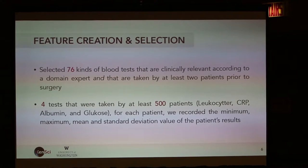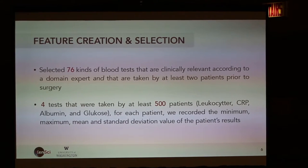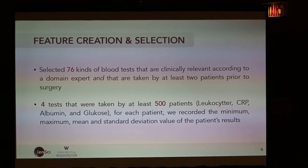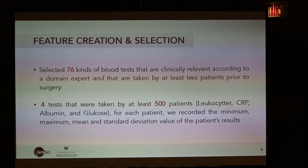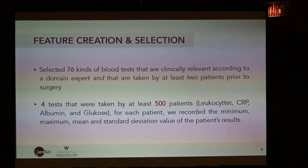We started with around 811 tests and came down to around 150. Then we looked at the 76 blood tests that were taken by at least two patients prior to surgery. Out of those 76, four were really showing good predictive values: leukocytes, CRP, albumin, and glucose — for which we looked not only at the frequency of how many times those tests were taken, but also the range of the values for the patients.